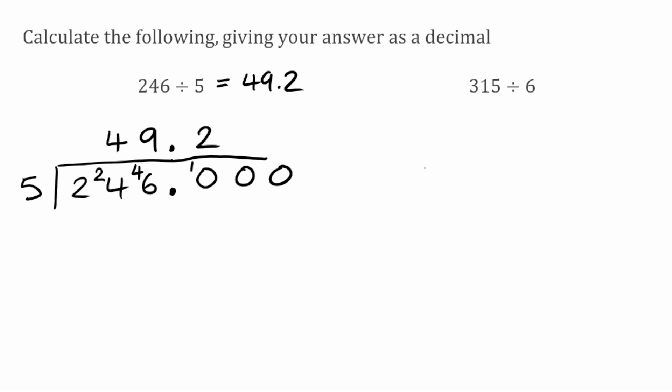For this next question we've got 315 divided by 6. To begin with, how many times does 6 fit into 3? Well it won't, so we could put a 0 here but as it's our first digit we don't need to, so I'm just going to carry this 3 over. We now want to see how many times does 6 fit into 31? Well that'll go 5 times, because 6 multiplied by 5 gives us 30, leaving us with a remainder of 1. So I carry that over. We now want to see how many times does 6 fit into 15? Well that'll fit in twice, because 6 times 2 is 12, and that's going to leave us a remainder of 3.